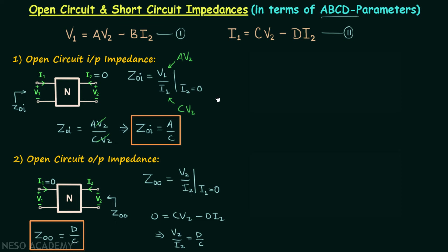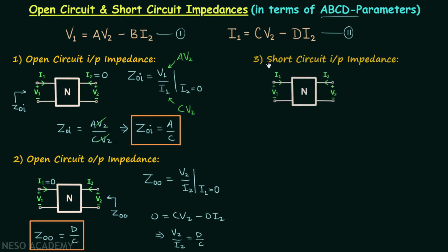Now we are going to find out the short circuit input impedance. We will short circuit the output port, and therefore voltage V2 will be 0. We will find out the input impedance and I will represent the impedance by Z sub SI.